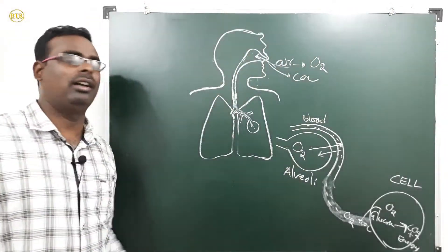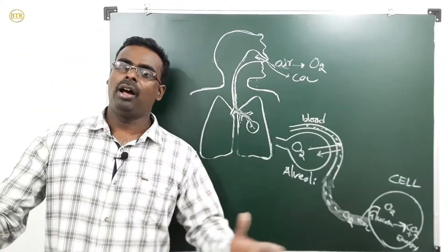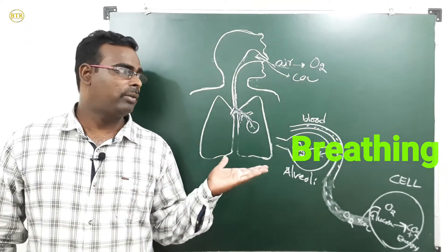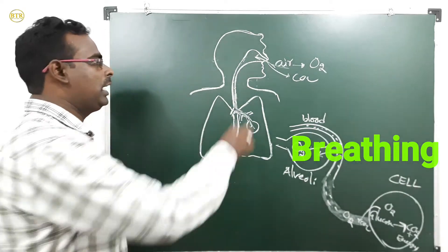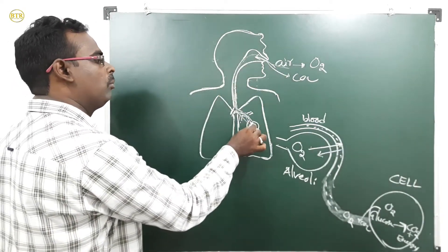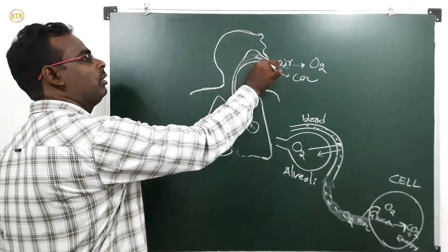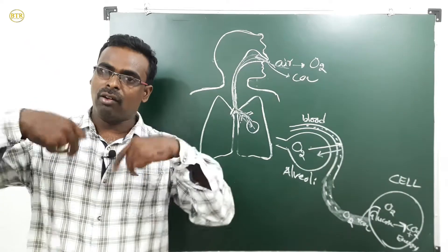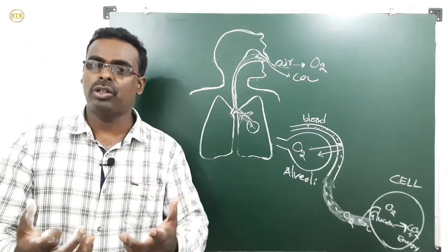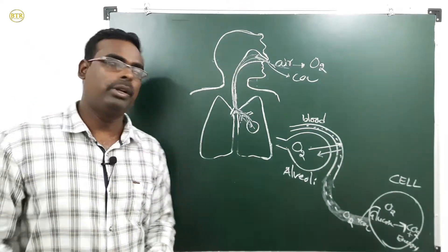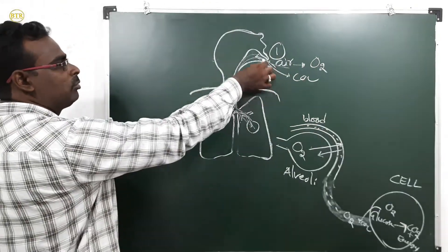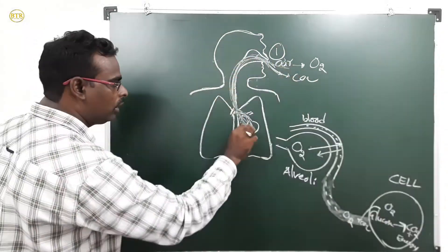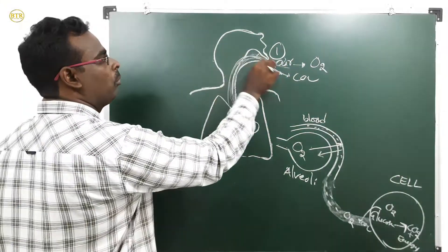Now I will explain the five steps. The first step is breathing. Taking air into the lungs and moving air out of the lungs is called breathing. The process of taking in oxygen from the environment and giving out carbon dioxide is called breathing. Oxygen moves into the lungs and carbon dioxide moves out of the lungs — that is breathing.